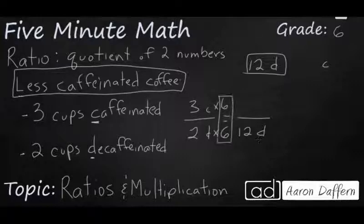Multiply top and bottom by 6 because 6 over 6 equals 1. So we're not changing it, we're just making it look different. So it looks like it's going to be 3 times 6 is going to be 18. So if you only had 12 cups of decaf, you could have 18 cups of caffeinated coffee.